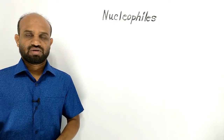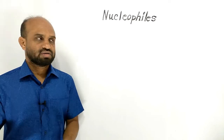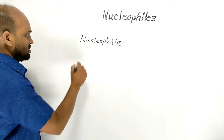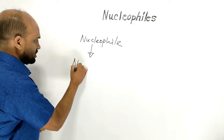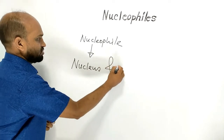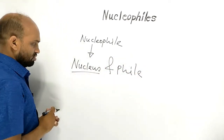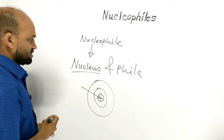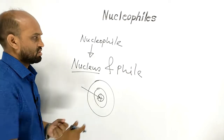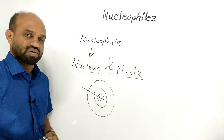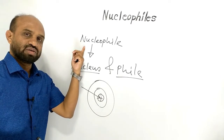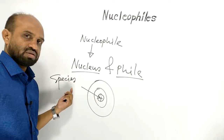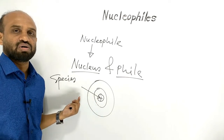What is a nucleophile? Let's write the term and analyze it. Nucleophile consists of two words: nucleus and phile. We know nucleus — the central part of an atom which is positively charged. Phile means loving. So nucleophile means nucleus loving.